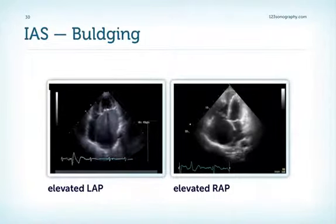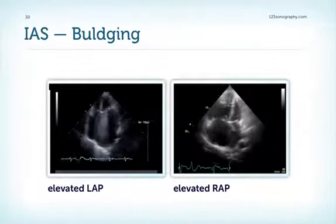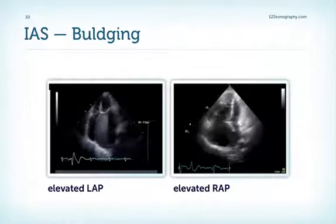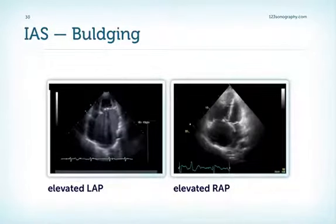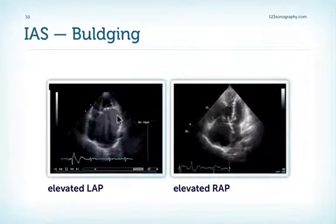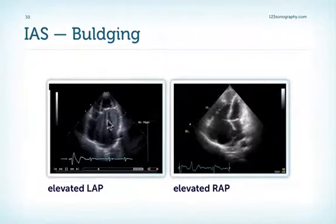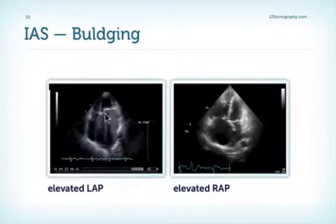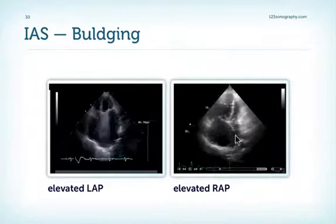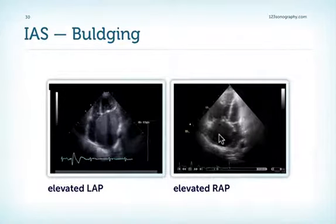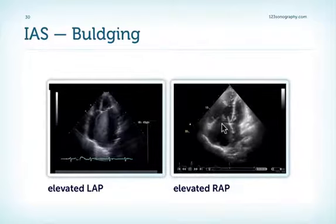An important additional finding is the position of the interatrial septum. If the interatrial septum bulges to the right, this is indicative of elevated left atrial pressure — as seen in this patient with rheumatic mitral stenosis. If it bulges to the left, it is indicative of elevated right atrial pressure — as in this patient with pulmonary hypertension.